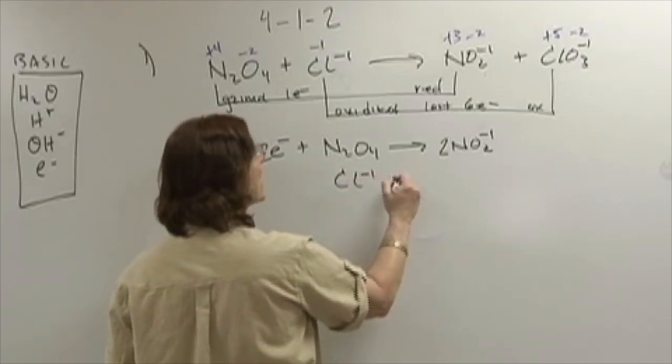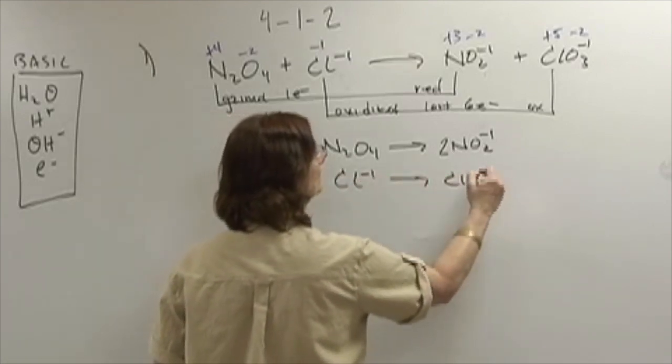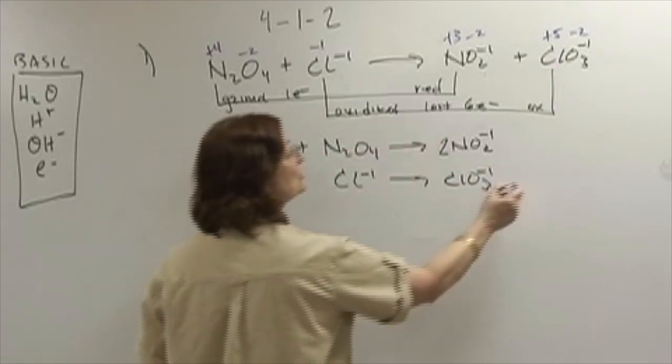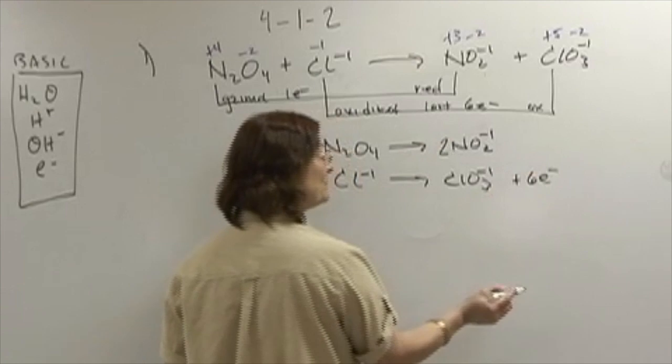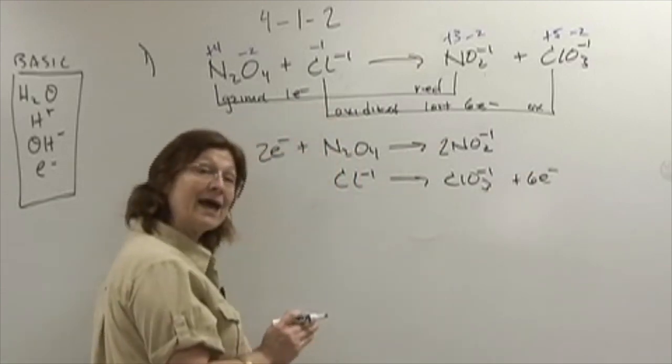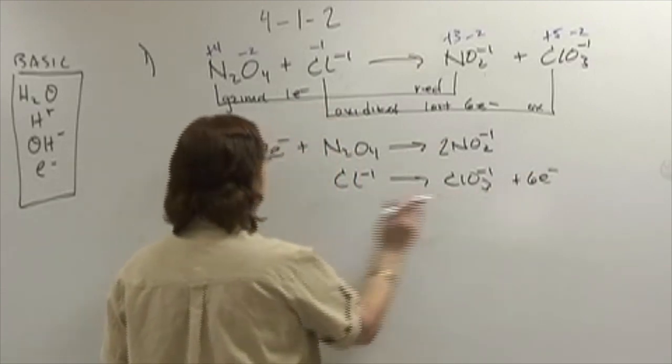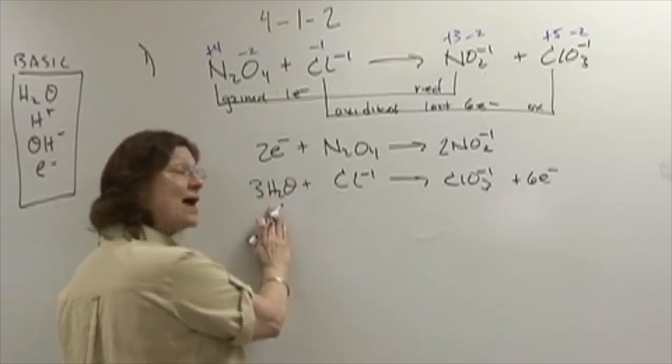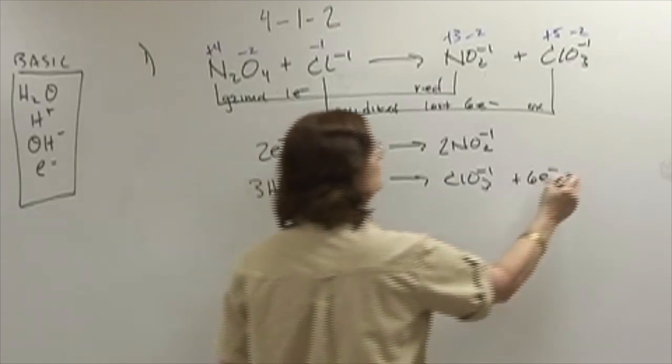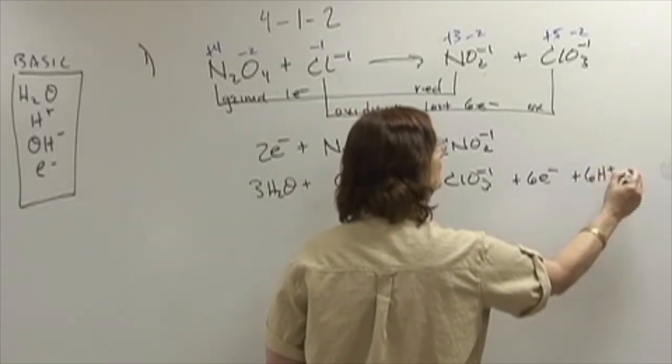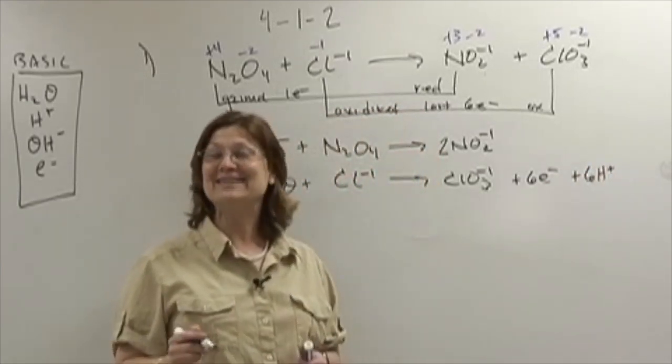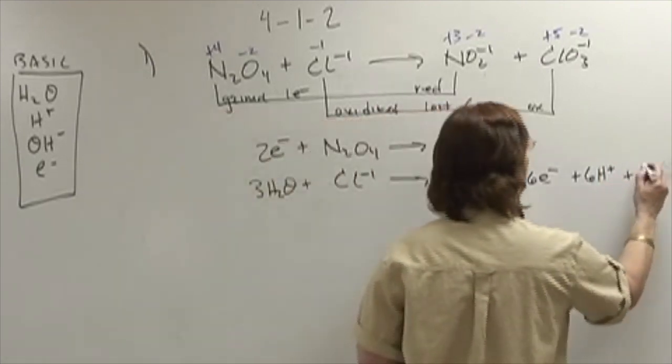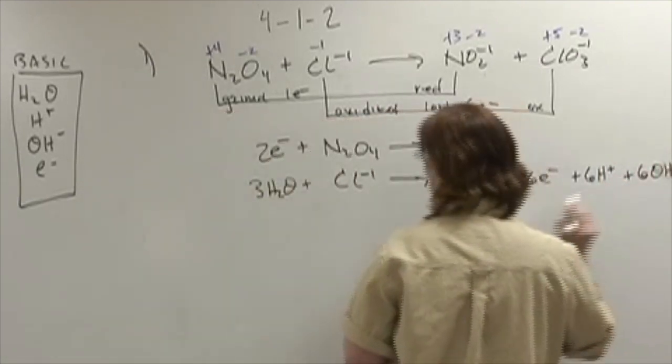Then, the second half-reaction. I oxidize and lost six electrons, so I'm going to add those six electrons back. There is only one chlorine atom. I need three oxygens, and therefore I will add three waters. When I add three waters, I will need six hydrogen ions and six hydroxides as well. So I will add six hydroxides to both sides of the reaction.